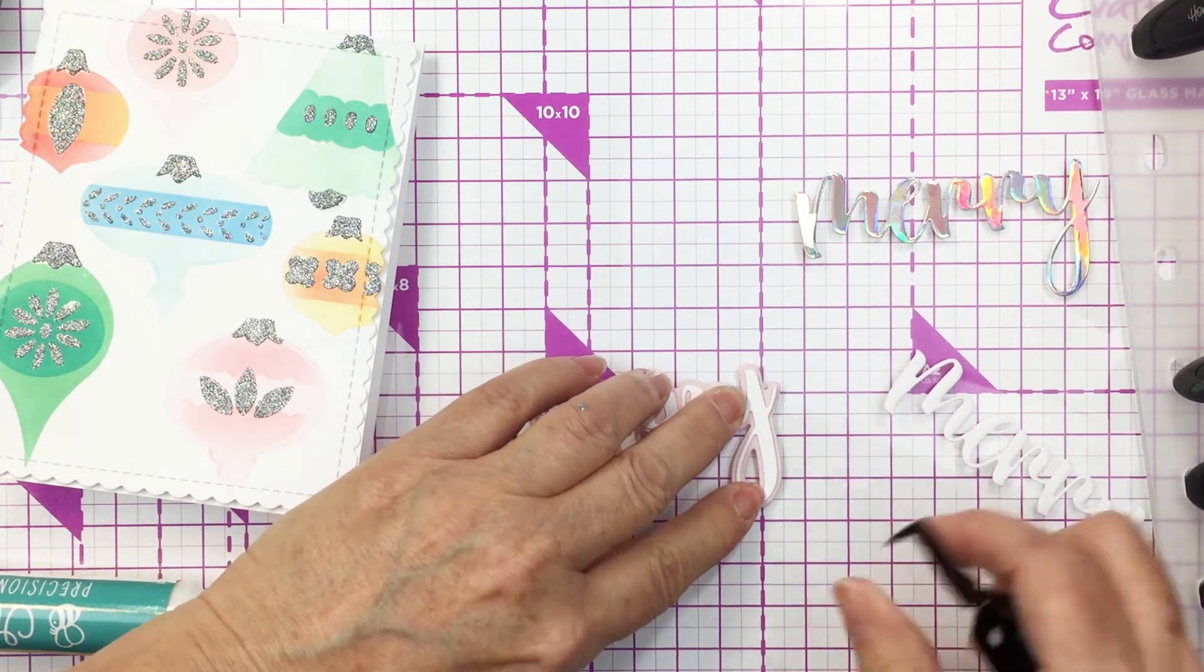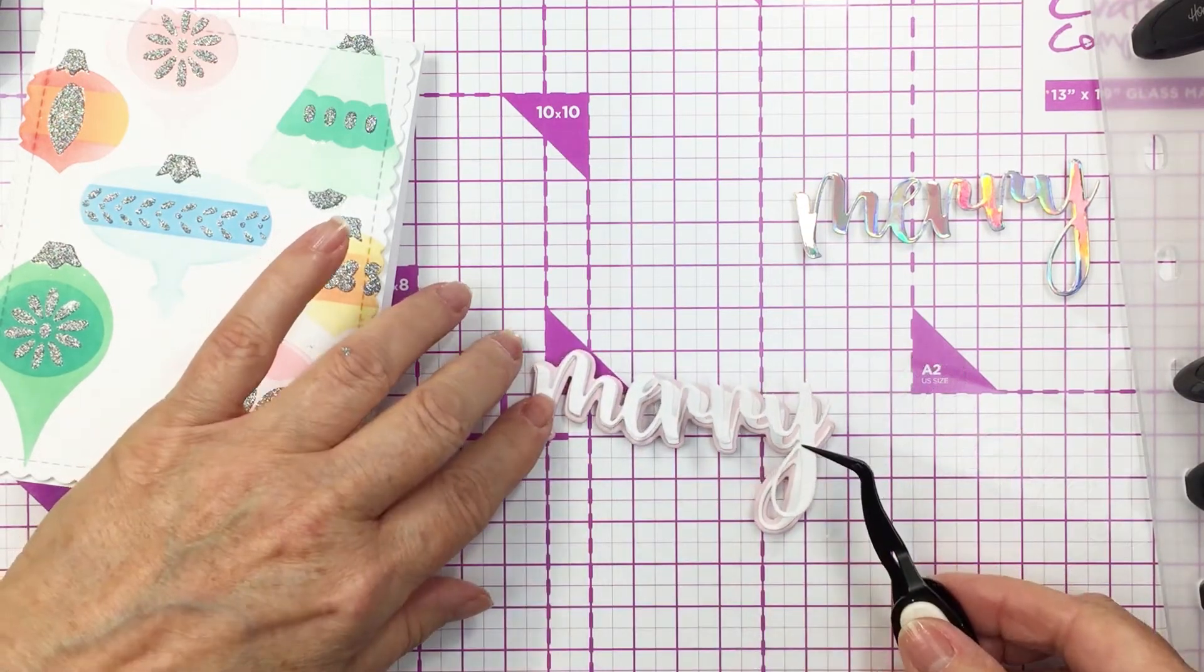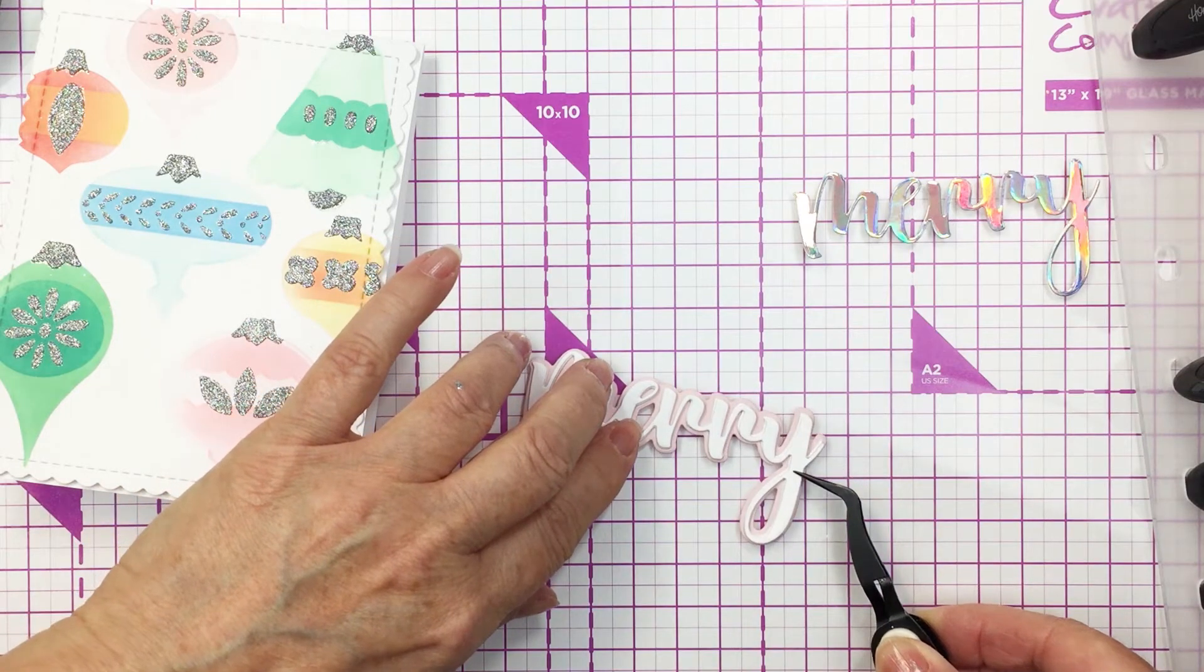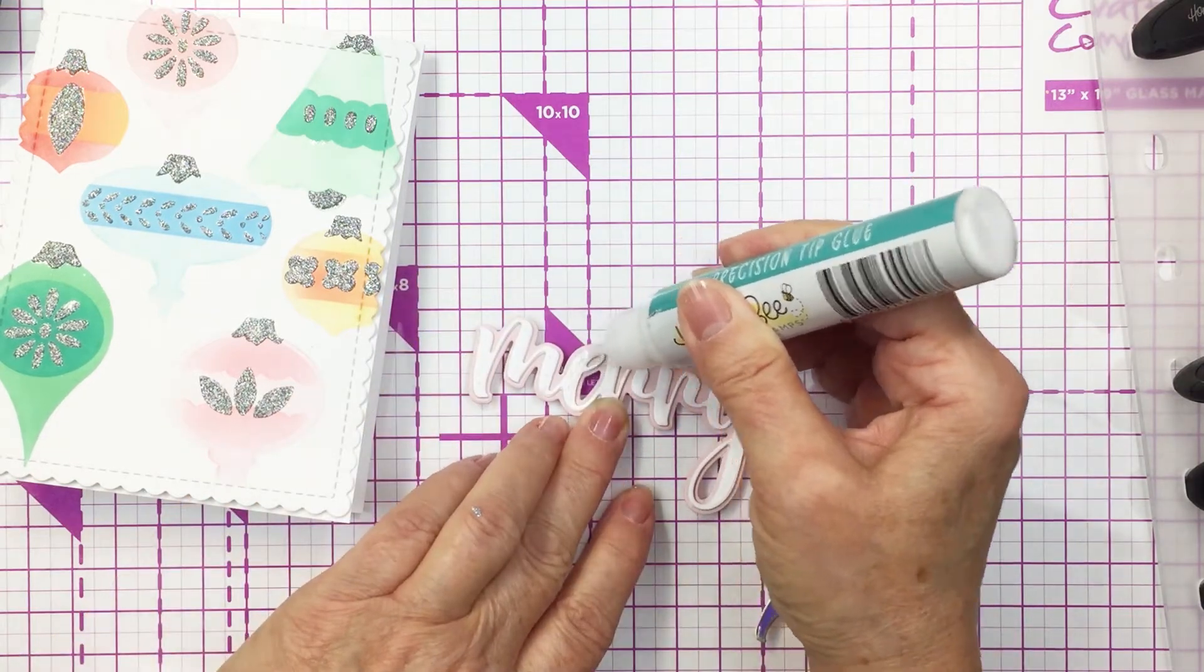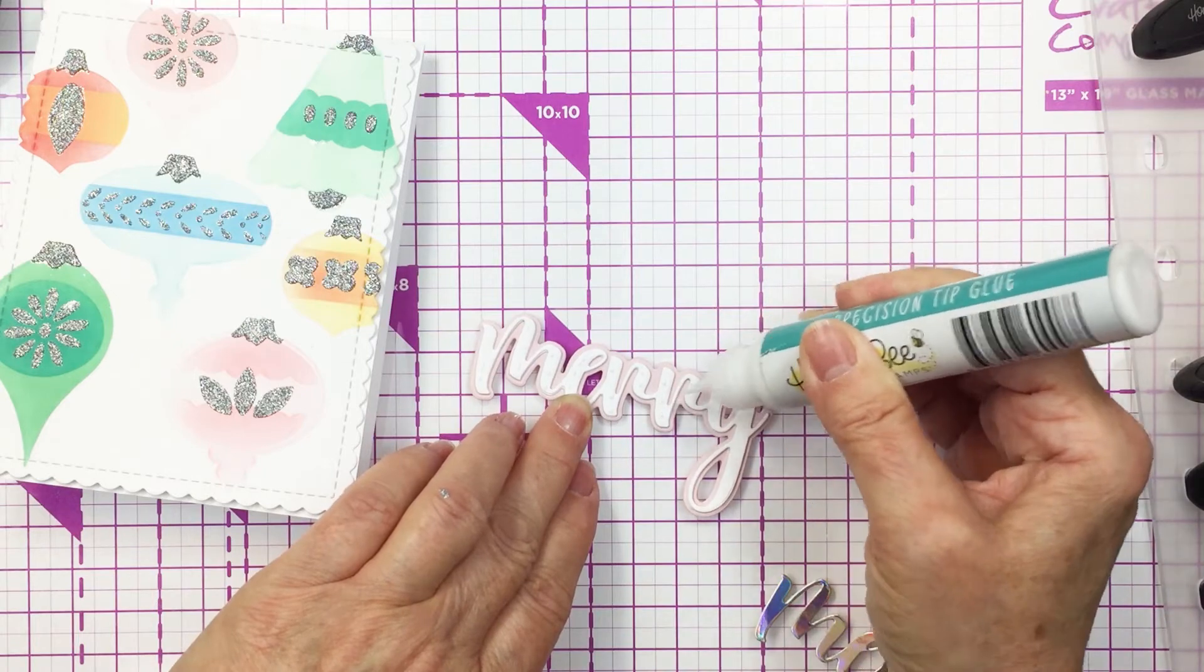The holographic cardstock just looks really pretty with the silver glitter glaze that's on the ornaments, and it just gives the card just a little bit of sparkle and shine. I just really love how that looks. I love holographic cardstock, I think it's so pretty and it definitely looks really nice on this project.